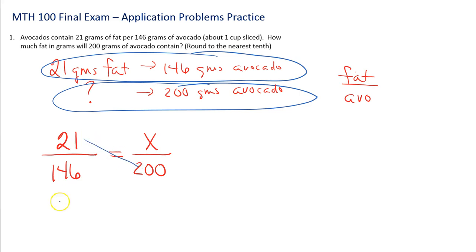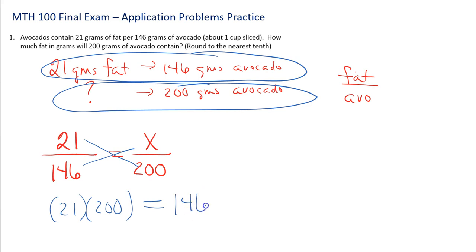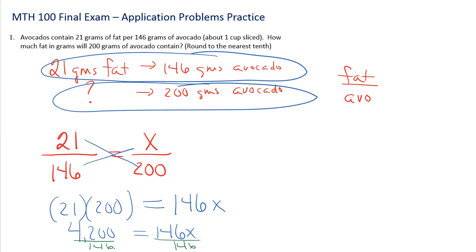So I'm going to say 21 times 200 equals 146 times x. Then on the calculator, 21 times 200 is 4,200, equal to 146x. Then I divide each side by 146. That's going to be the amount of fat in 200 grams of avocado. 4,200 divided by 146 gives me x is equal to 28.76712329.